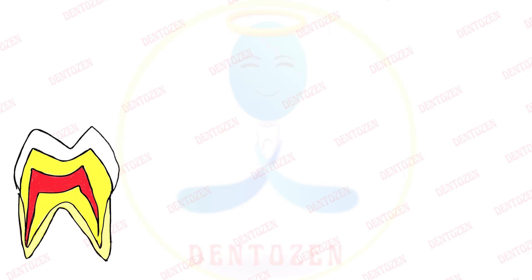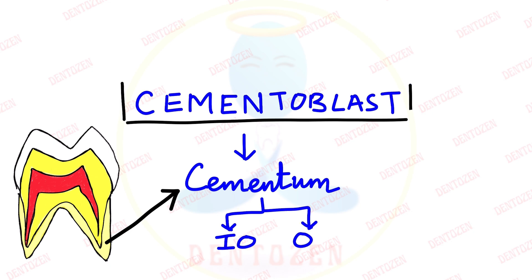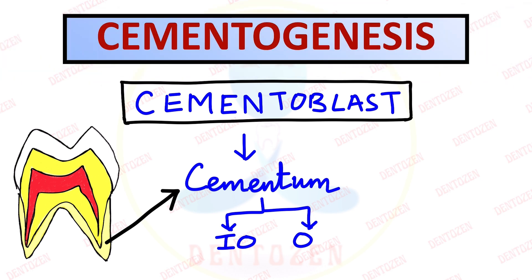Welcome to Denderson. The outermost layer of the root is called cementum, made up of inorganic and organic material. It is formed by special cells called cementoblast cells, and this process of cementum formation is called cementogenesis — 'genesis' means formation. This can be an important theory exam question. To understand that, we first need to know more about the cementoblast cell.